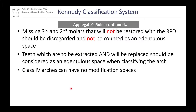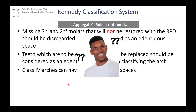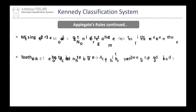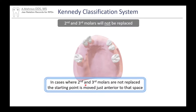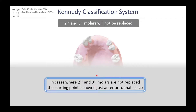There are more Applegate's rules. Missing 3rd and 2nd molars that will not be restored with RPDs should be disregarded and not counted as active spaces. Teeth that are to be extracted and will be replaced should be considered as already part of the existing space when classifying. Class 4 arches can have no modification spaces. Simply put: missing 2nd or 3rd molars not going to be restored — act as if they were never there. In those cases, the starting point moves anterior to the spaces we are not restoring.